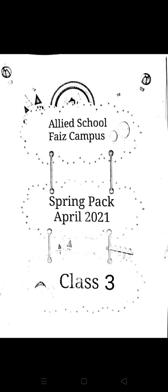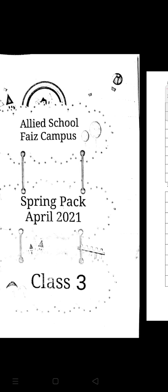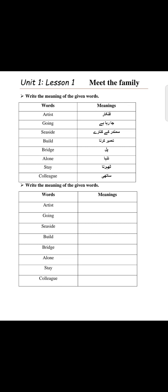Assalamu alaikum. My Light School, Fast Campus, Spring Pack, Class 3, Subject English. On your book page number two, Unit number one is 'Meet the Family' and the lesson number one is 'Listen and Speak.' This story is about Mr. and Mrs. Burkey's family. They have three children whose names are Syrah, Imran, and Nadia.